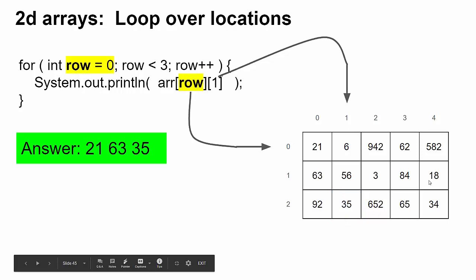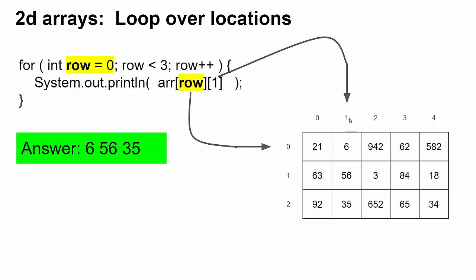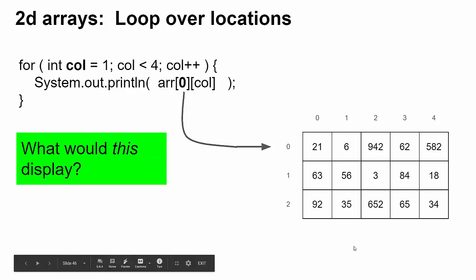So row two, column one displays the number 35. So altogether we've displayed the values six, 56, 35. And you'll notice that those are the values going down in column that's at location one, which sort of makes sense. I'm saying, let's visit all the rows from zero to two. Here are the row numbers, zero to two, and those are changing, but the column number one is always the same. So I'm going down six, 56, 35.